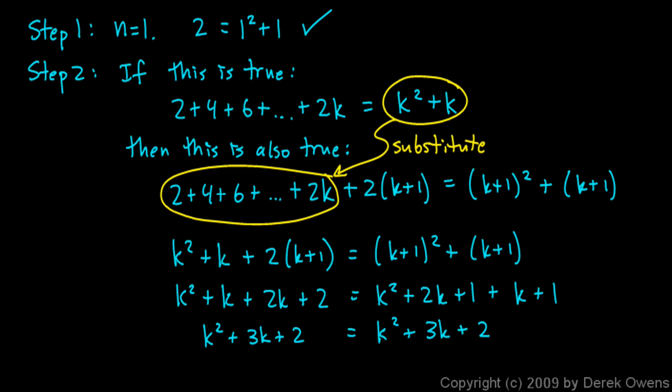So k squared plus 3k plus 2. And yes, k squared plus 3k plus 2 is equal to that same thing every single time. So step 2 works. We have just shown that if this is true, if it works for some number k, then it also works for some number k plus 1.